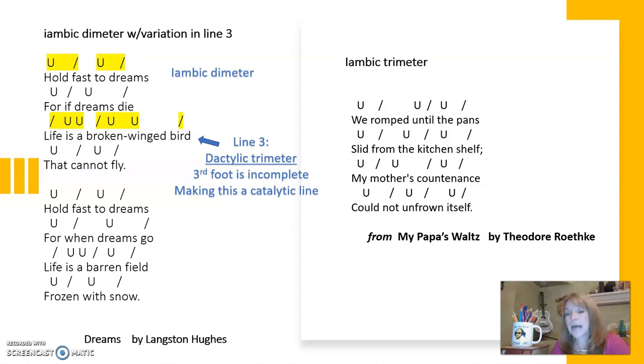On the right side, a stanza from a very famous poem called My Papa's Waltz, another of my favorites. This one is really brilliant because the meter, which is iambic trimeter, mirrors the idea or the music of the poem, which is named in the title My Papa's Waltz. We romped until the pans slid from the kitchen shelf. My mother's countenance could not unfrown itself.